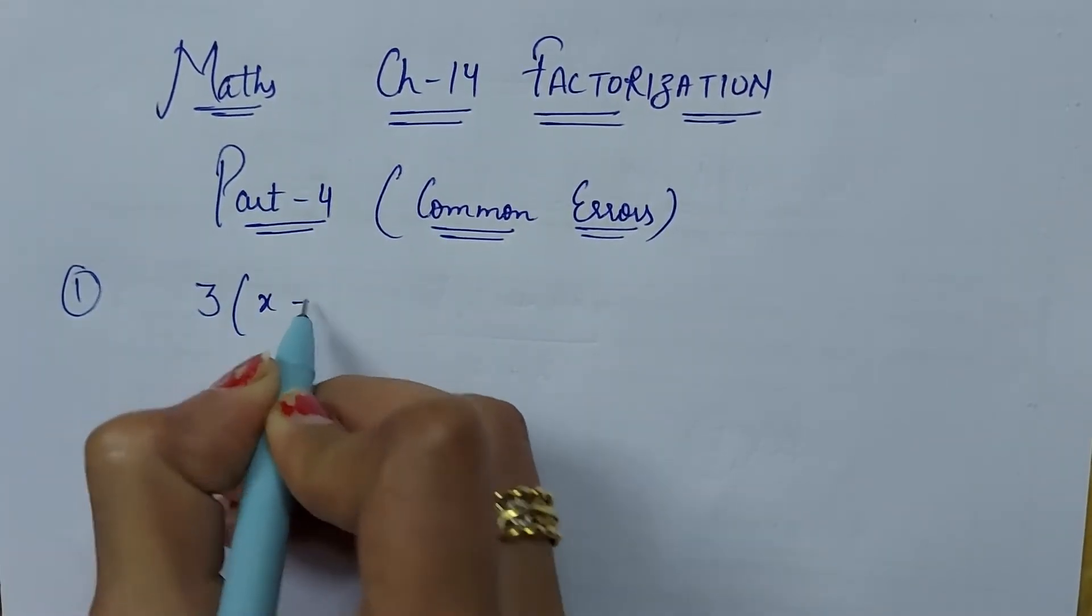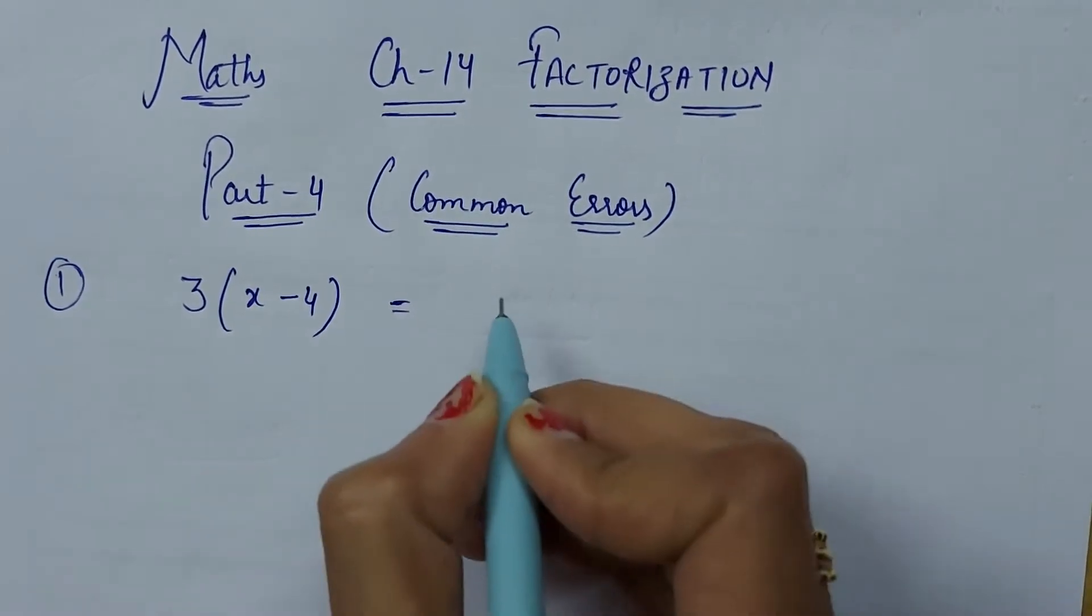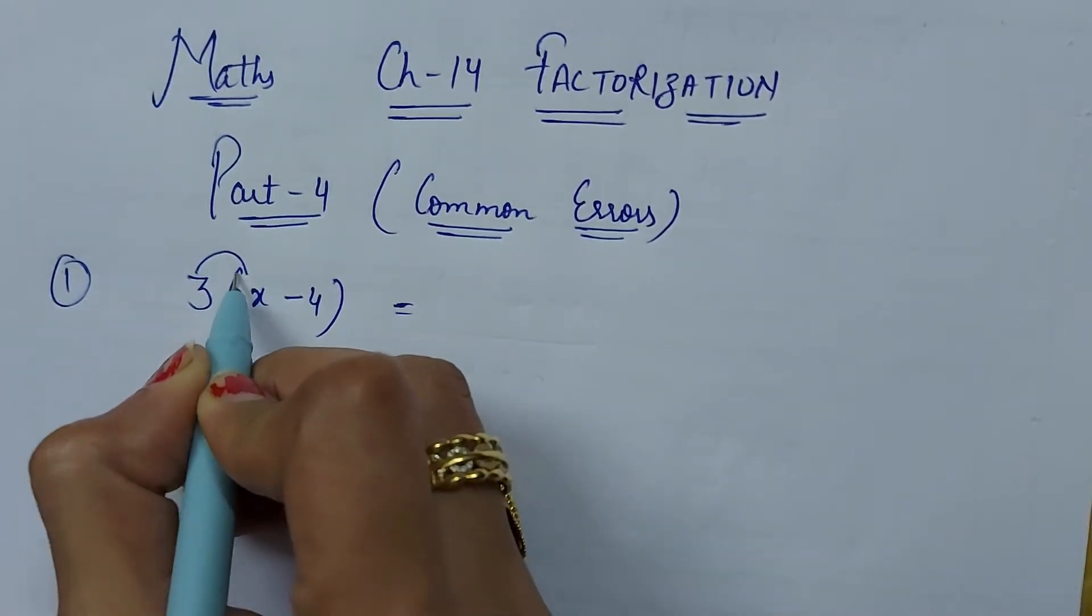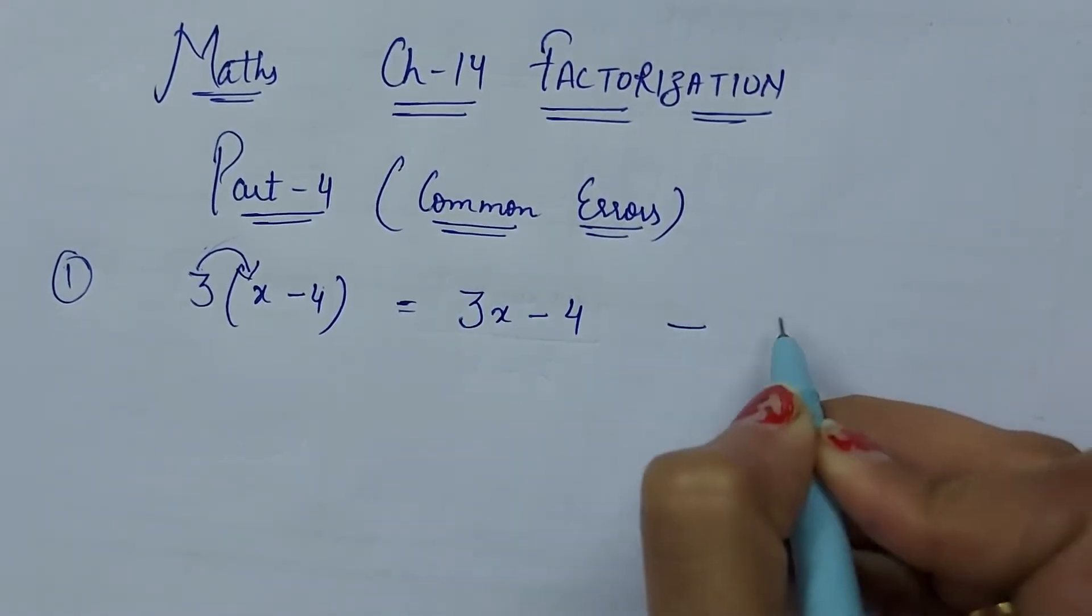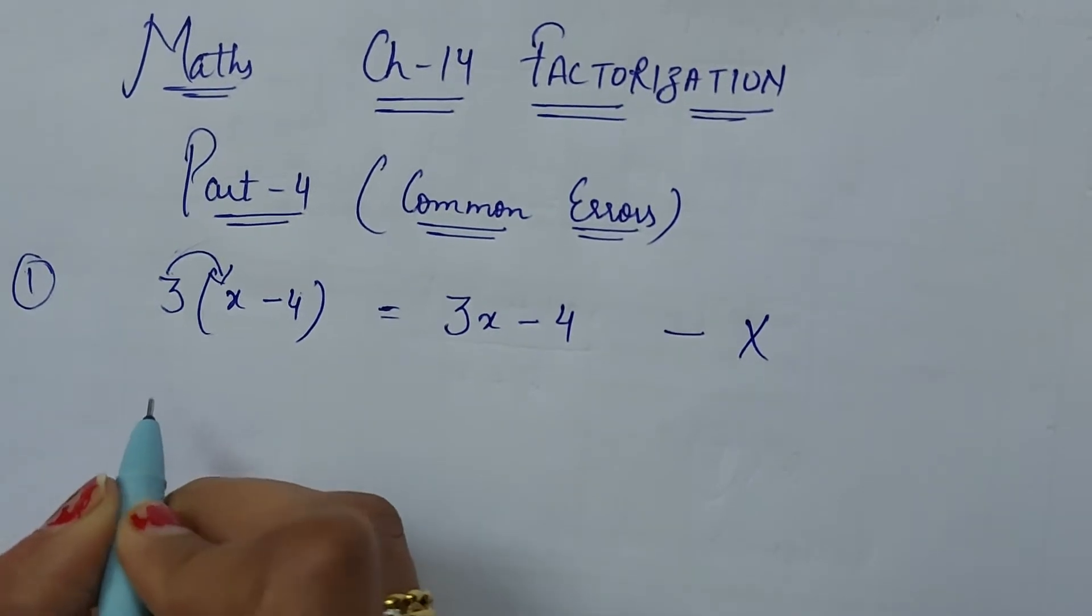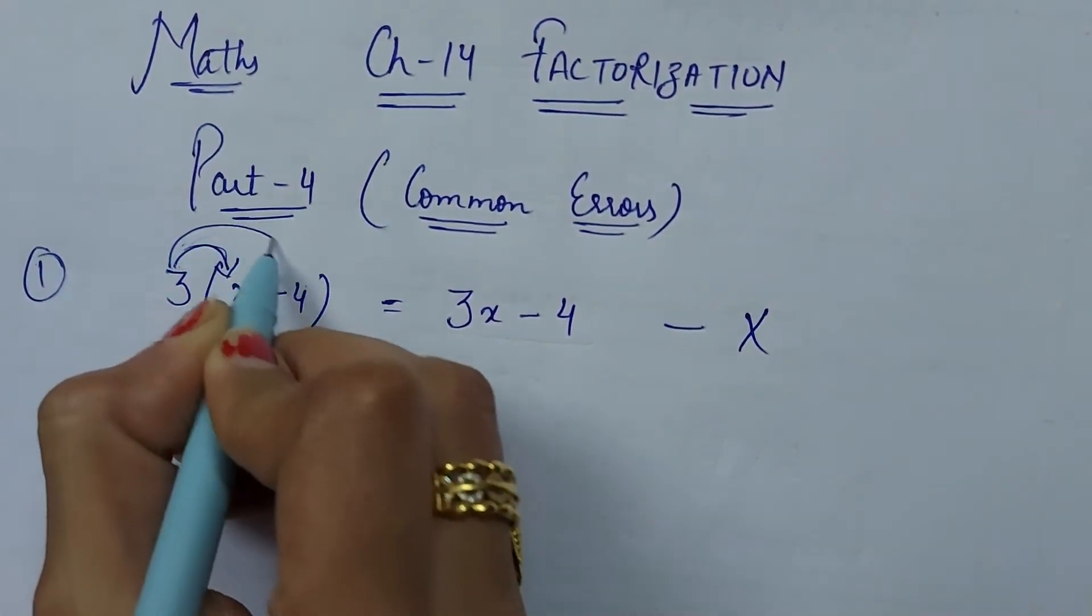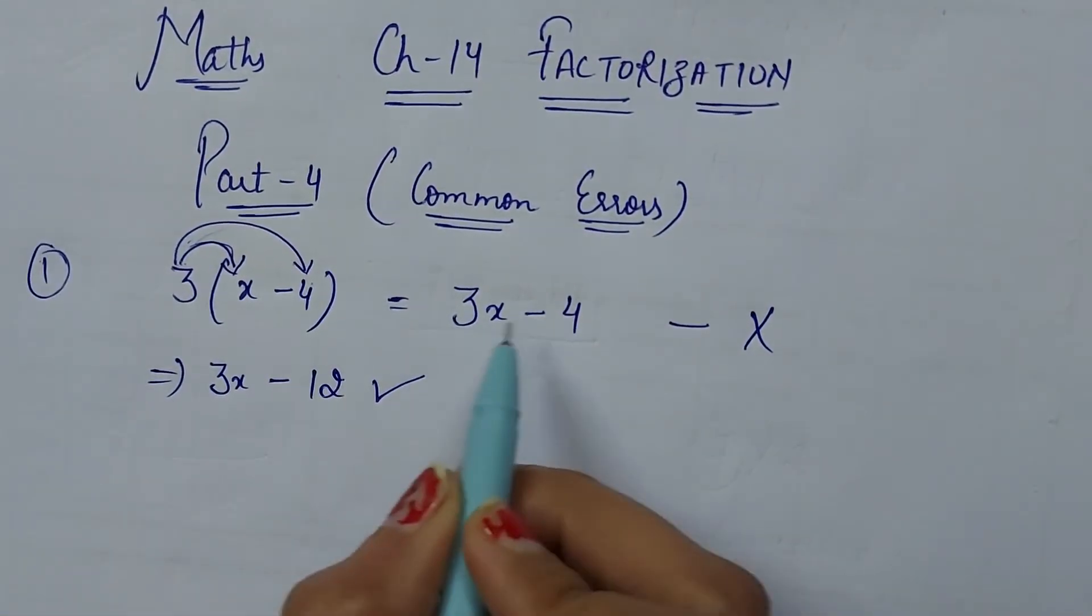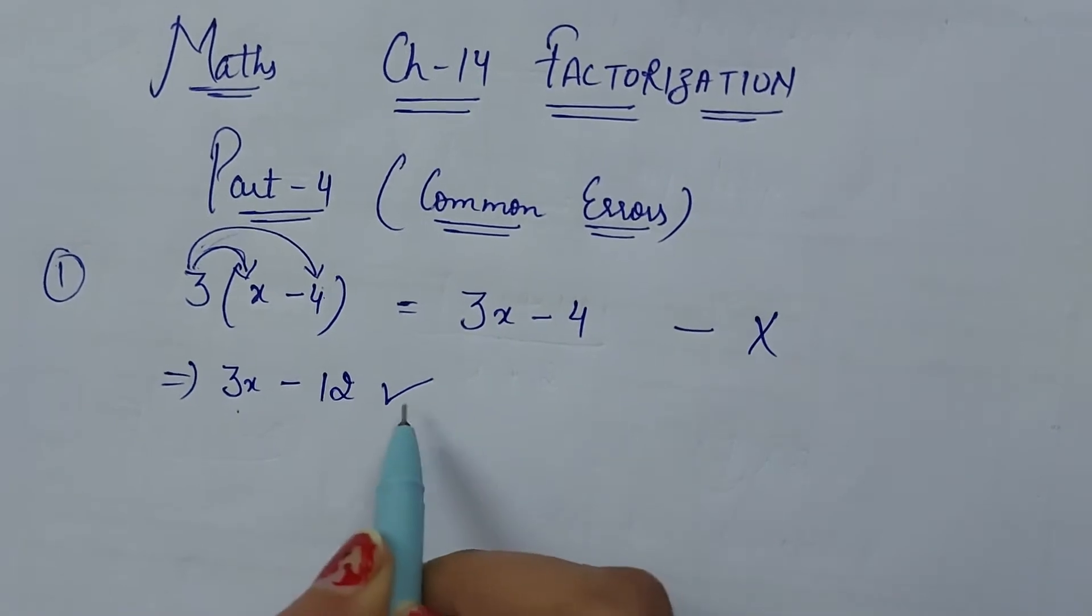First example is 3x minus 4. Factorization chapter mein hum dekhenge common errors kya hote hai. Sabse pehle hum dekhenge ki students aise karte hain: 3 ko x ke saath multiply karte hain aur 3 ko hi 4 ke saath multiply karte hain. Multiply kiya toh 12 answer.